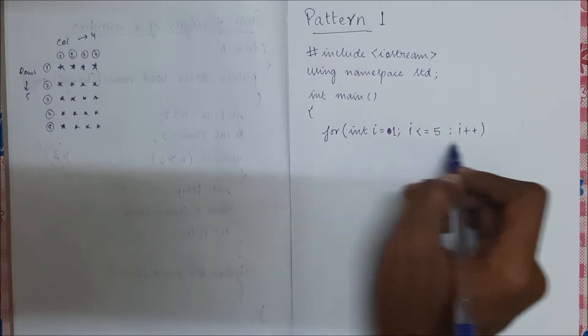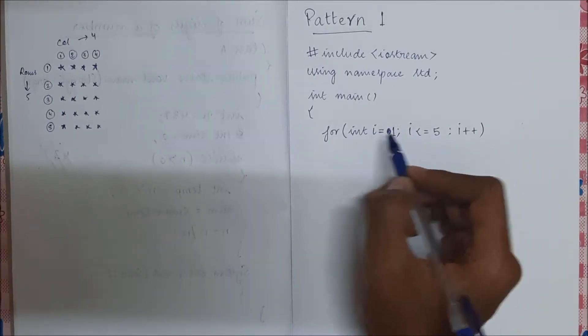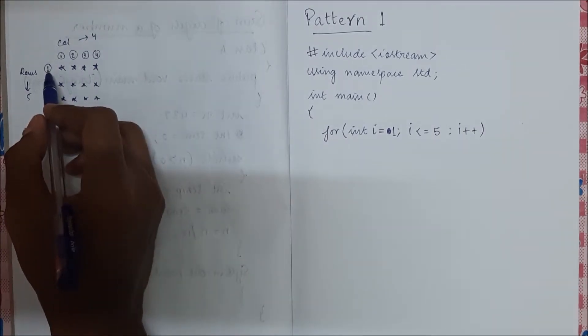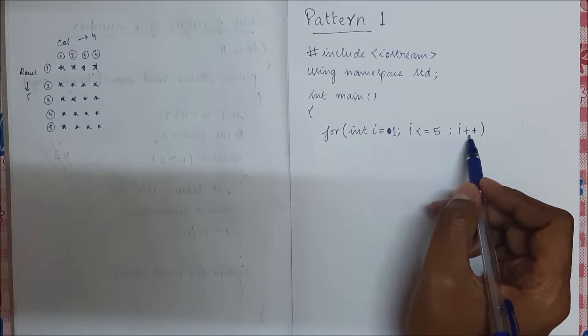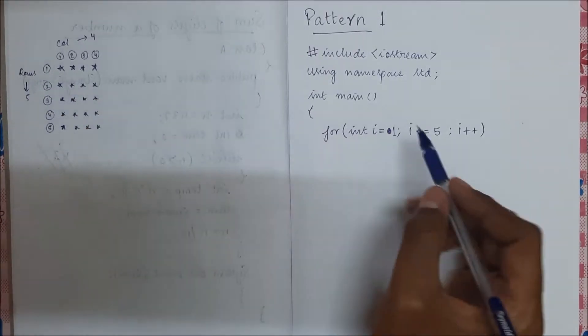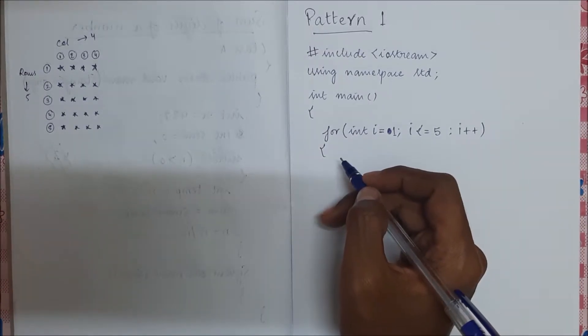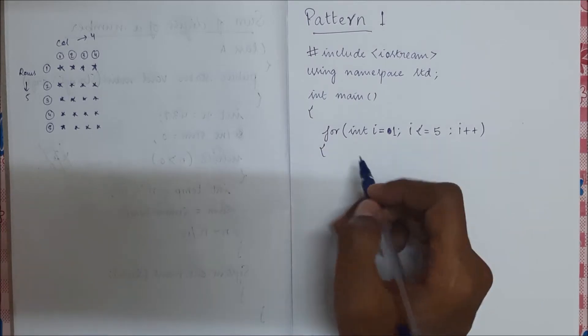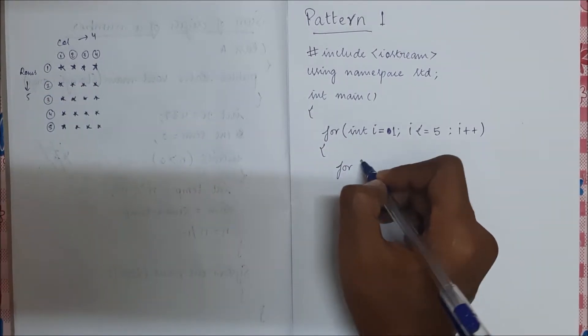Now this for loop will make sure that i is one for the first time, that means it is in row one. Next time when i is incremented to two, it means in row two, three, four, five. When i becomes more than five, it will come out of the loop.